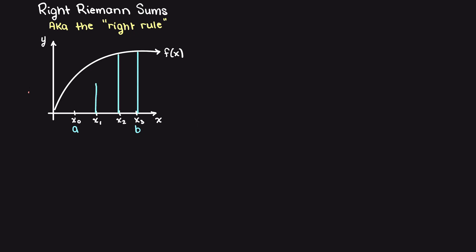Next, let's talk about the right Riemann sum, also known as the right rule. Here our area of each rectangle will be found in a similar way by multiplying our base, which is our step size, times our function's output when using the right side of the rectangle's x value as an input, which you can see here.